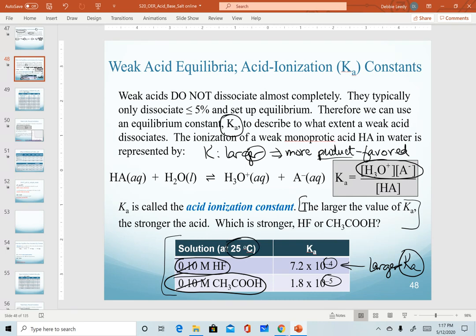So the larger Ka value, the stronger an acid. And so to answer this question, it would be HF.